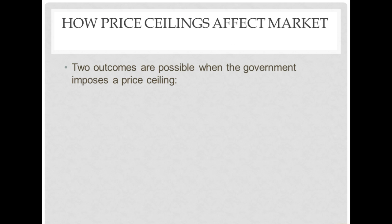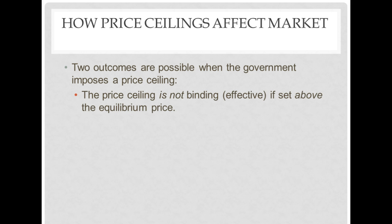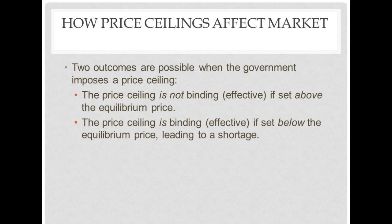So what have we learned? Price ceilings have to be below equilibrium in order to actually have an effect. If they're set above equilibrium, the equilibrium price itself will end up being where the market settles. To summarize: if a price ceiling is not binding — set above equilibrium — it will have no effect and the market will go back to equilibrium. If it is binding — set below equilibrium — it will lead to a shortage. Price ceilings set above equilibrium have no effect; price ceilings set below equilibrium lead to shortages.